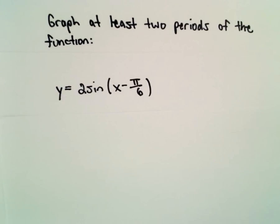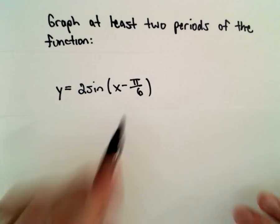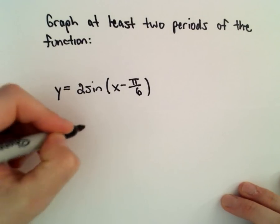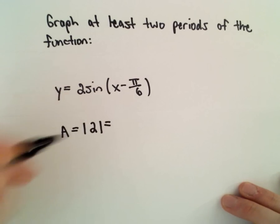Okay, here I'm going to graph two periods of the function y equals 2 times sine of x minus pi over 6. And what I'm going to do is I'm going to think about the amplitude, which is the absolute value of positive 2, or which will give us 2.